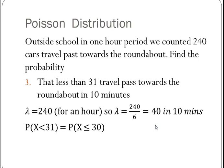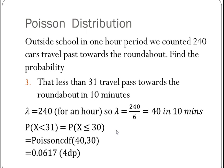So I've got probability x is less than 31, so that means probability of x is less than or equal to 30. Remember our cumulative distributions have to be less than or equal to, so now I'm using a Poisson CDF 40, 30, and that will give me that the probability that less than 31 travel past is 0.0617.